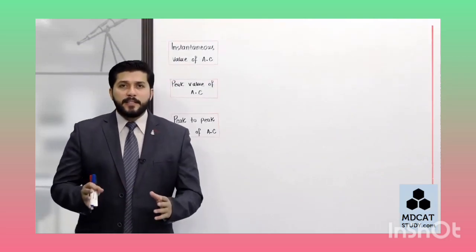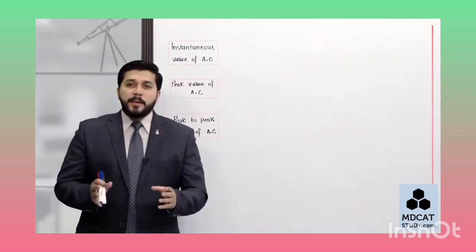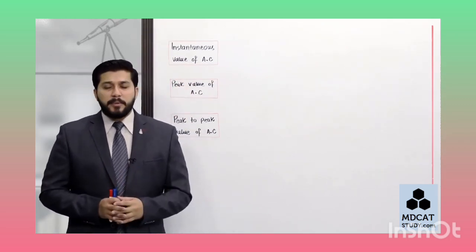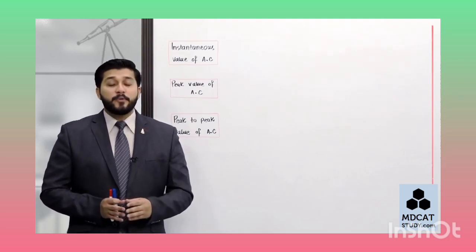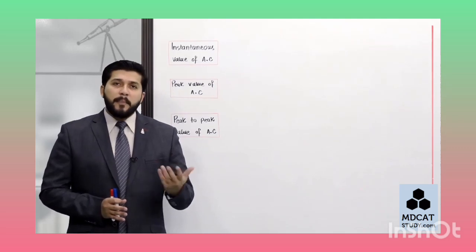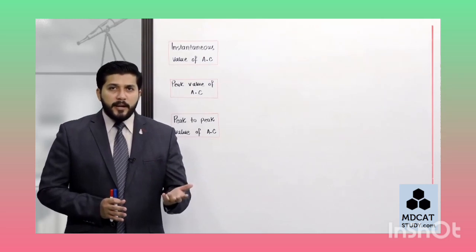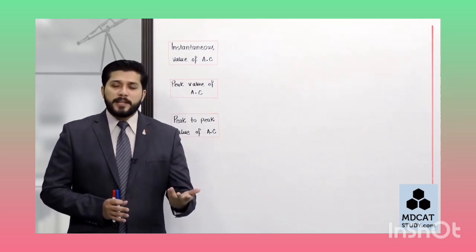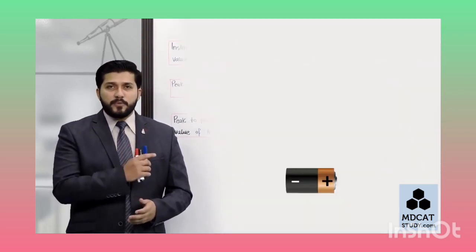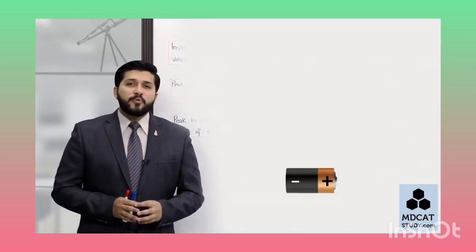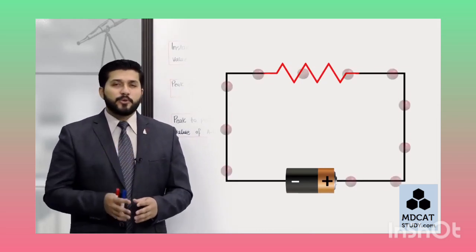Students, alternating current کے اندر different values of current کے نام میں نے آپ کے سامنے لکھے ہیں۔ لیکن اس سے پہلے کہ ان کے بارے میں detail بتاؤں، پہلے یہ دیکھتے ہیں کہ جب chapter 13 میں direct current پڑھا تو DC کے لیے different values کیوں نہیں پڑھی۔ جب بھی DC کا ذکر آتا تھا تو میں simply 'current' بول دیتا تھا۔ وجہ یہ ہے کہ ہمارے پاس DC source جیسے cell یا battery کو resistor سے connect کریں تو charges کا flow شروع ہو جاتا ہے۔